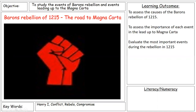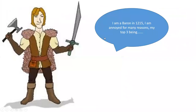As a starter activity, based on what we looked at last lesson, put yourself in the viewpoint of a baron in 1215 and write down three reasons why the barons would be most unhappy. Think of a piece of evidence and explain why that would make a baron so unhappy in 1215, which would lead them to rebel against their king.